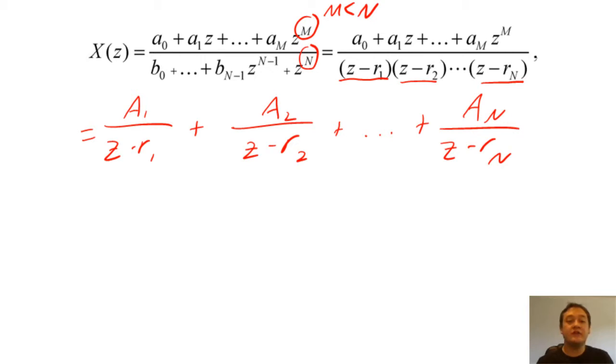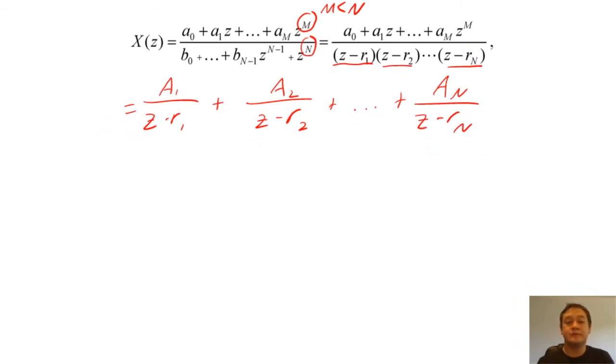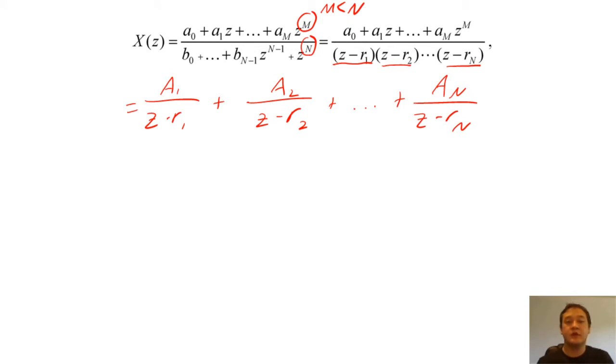The numerator of these components is called a residual. By multiplying both sides of this equation by one of the roots, we can find each residual by evaluating X of Z by the chosen root.